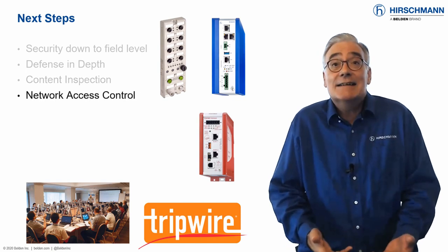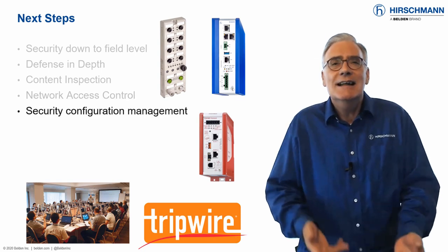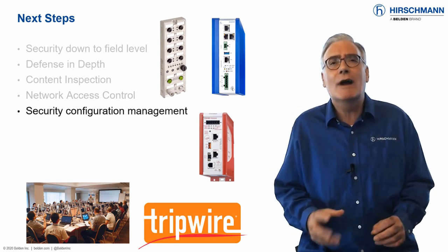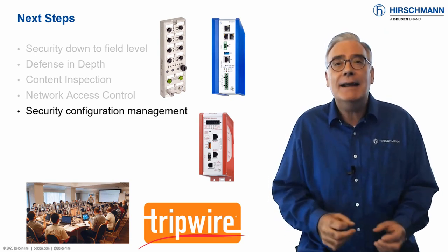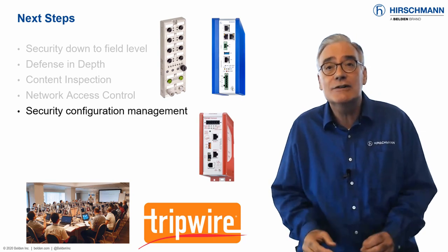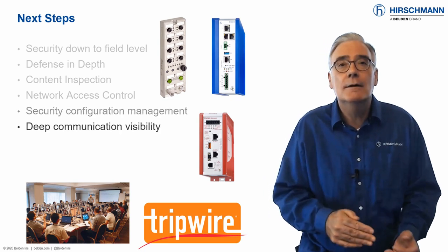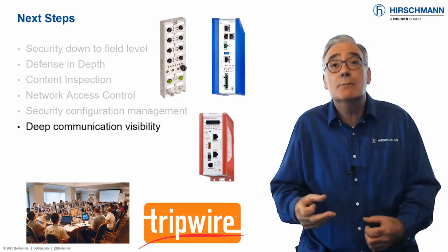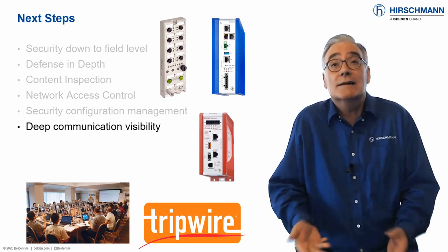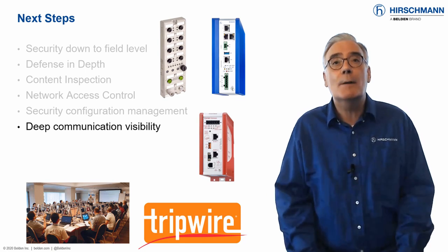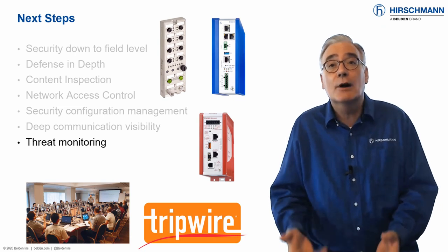Network access control can provide precise permissions to users. If your organization is subject to regulatory compliance or industry best practices, applications exist to facilitate integrity monitoring and security configuration management. Passive scanning and agentless monitoring offer the greatest visibility into your industrial networks without disrupting live operations. Complete the process with real-time threat monitoring.